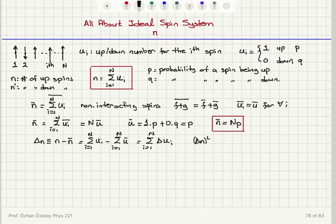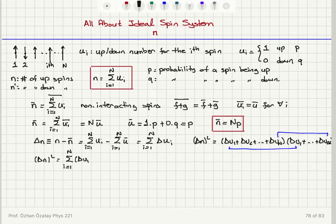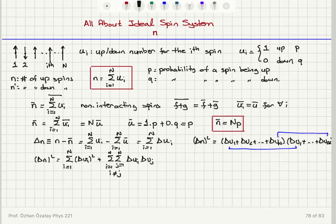If I calculate delta n squared, this equals delta u1 plus delta u2 plus ... plus delta u_N, multiplied by itself. This gives two types of terms: the squared terms delta u1 squared, delta u2 squared, and so on — that is the sum from i equals 1 to N of delta u_i squared — and then the cross terms: the sum over i not equal to j of delta u_i times delta u_j.